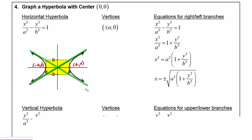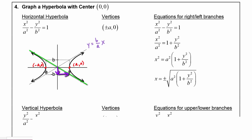Recalling slope-intercept form, the y-intercept of both asymptotes is (0, 0). For the first asymptote, starting from the origin we go up by b and to the right by a, so the slope is b/a and the equation is y = (b/a)x. For the second asymptote, we go down by b and to the right by a, giving a slope of −b/a and equation y = −(b/a)x.